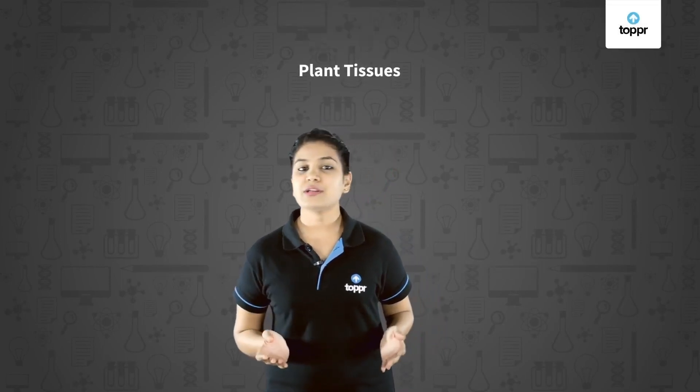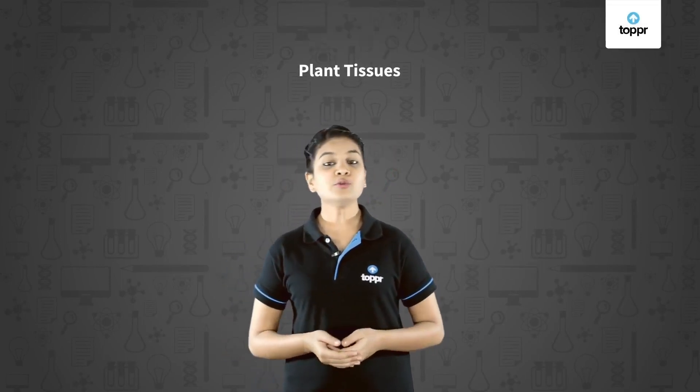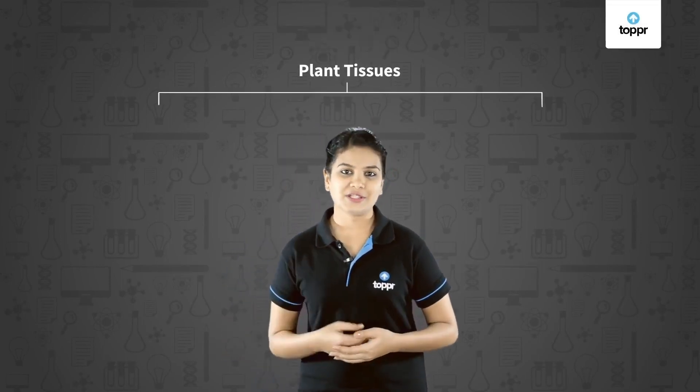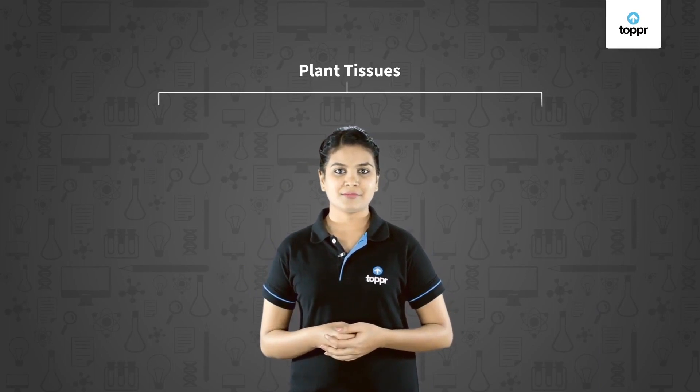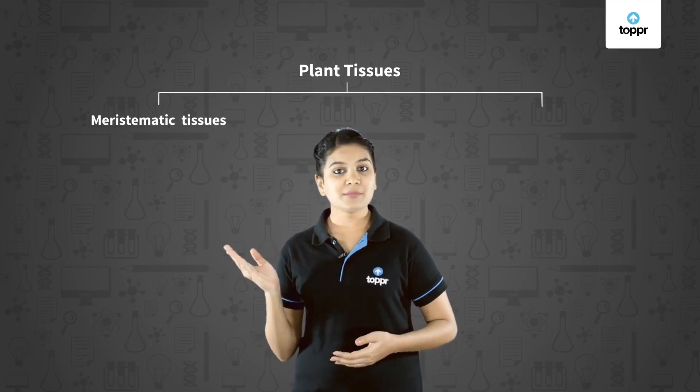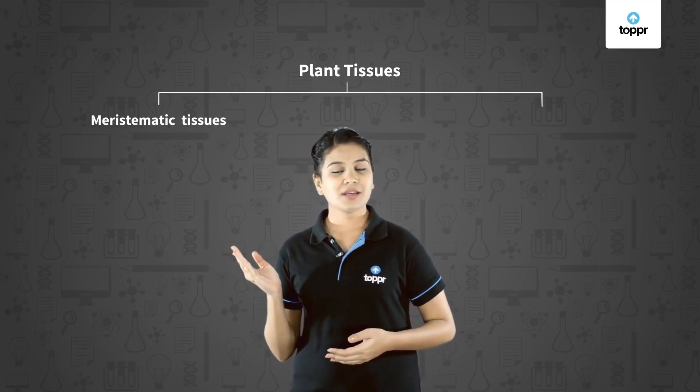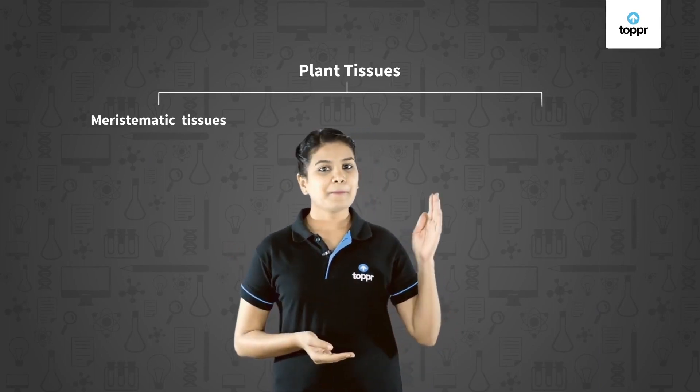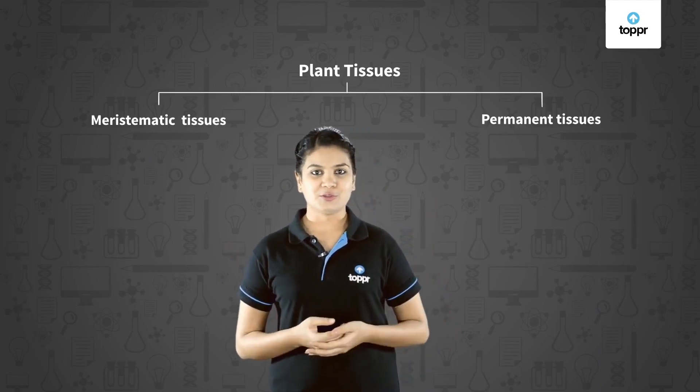Plant tissues are divided into two major categories: meristematic tissues and permanent tissues.